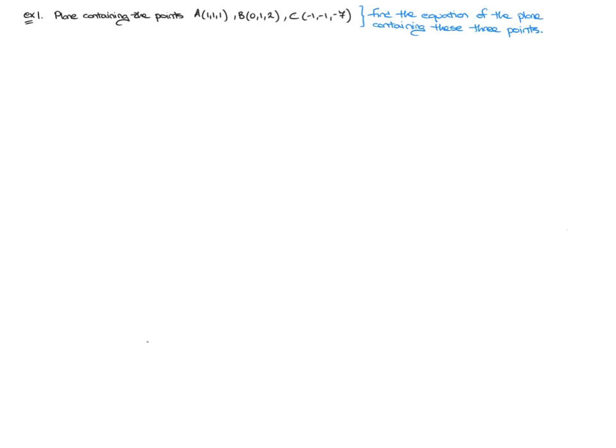Remember, the vector equation of a plane looks something like this: R is equal to A plus alpha U plus beta times V. Now, A is the position vector of any point on the plane, and U and V are two non-collinear vectors which are fully contained inside that plane.